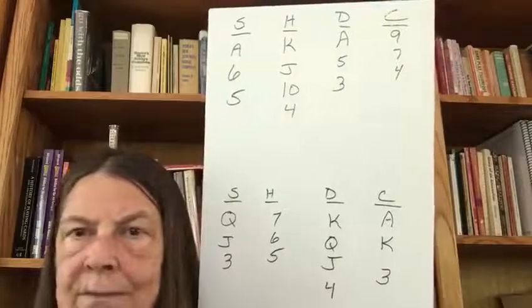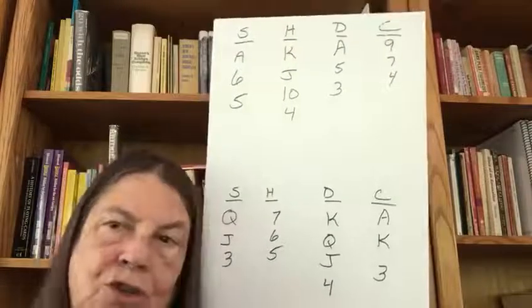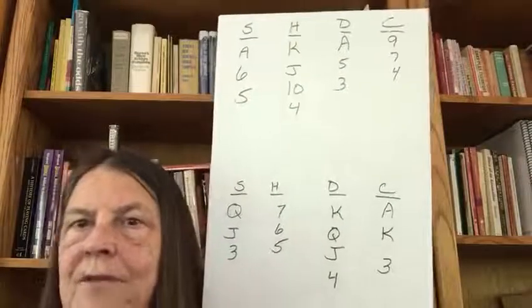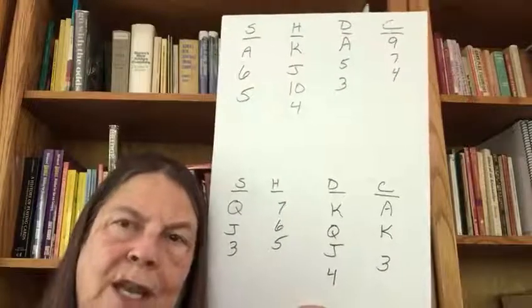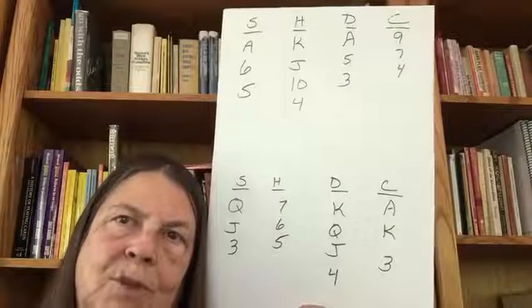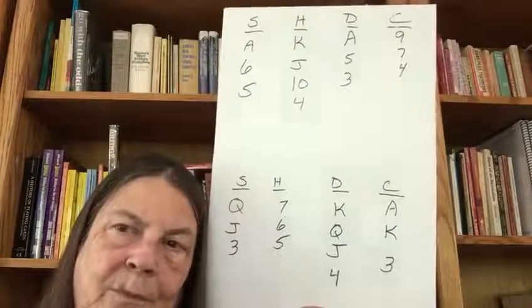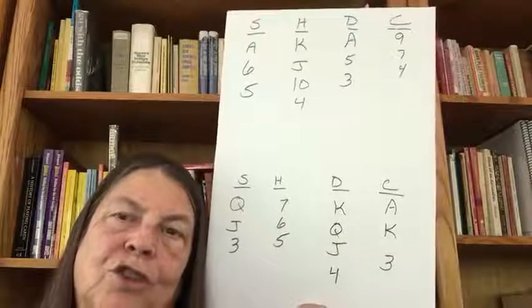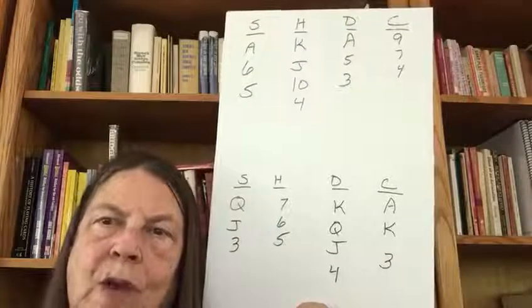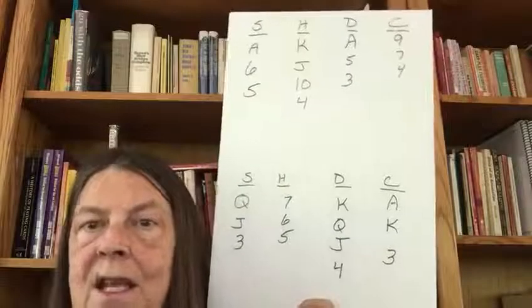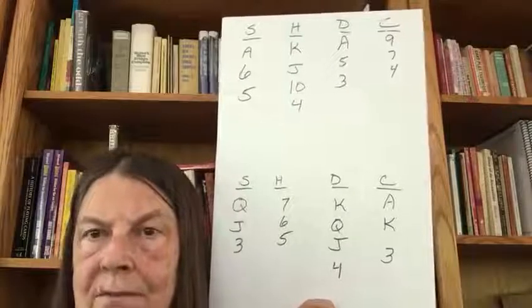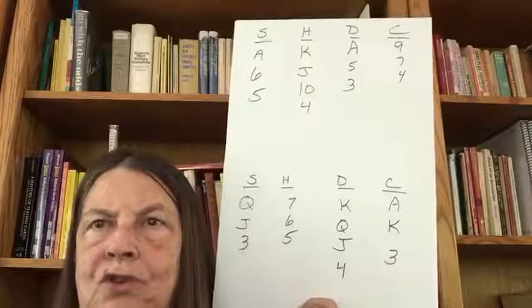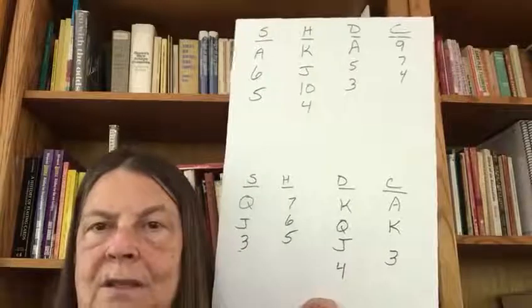If the diamonds are gone, it's very difficult for you to make sure that you can finesse hearts twice. Those diamonds are entries to declarer's hand in order for him to lead hearts a second time. When you don't have enough tricks to make your contract, you need to look for other places to create tricks. What I call this in my classes is you need to create the tricks you need before you take the tricks you already have. Create the tricks you need before you take the tricks that you already have.